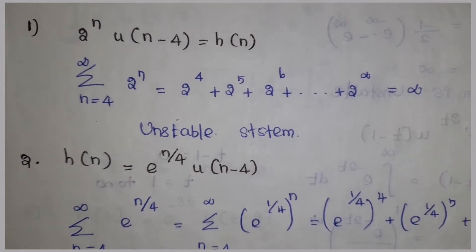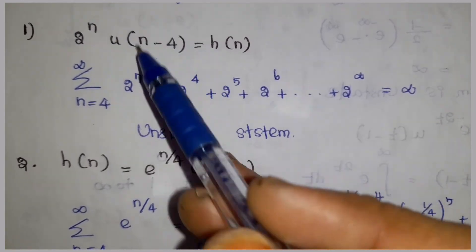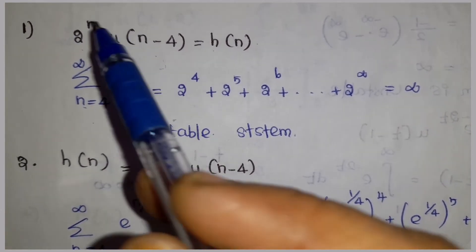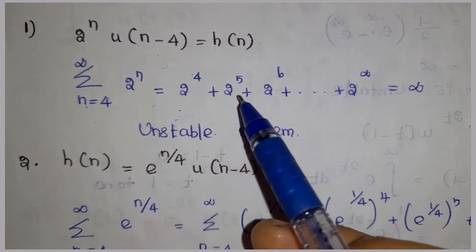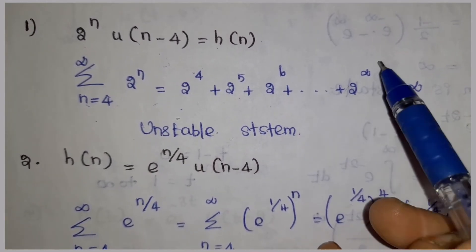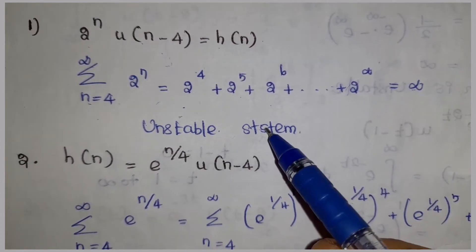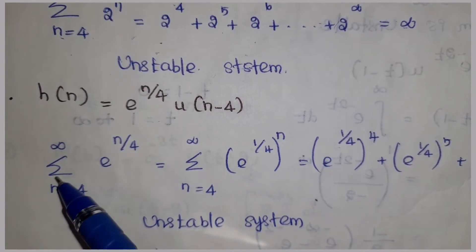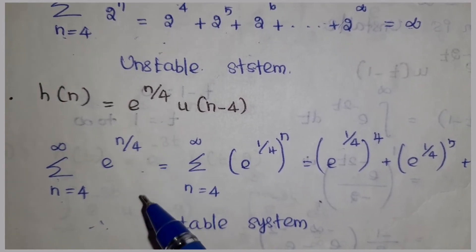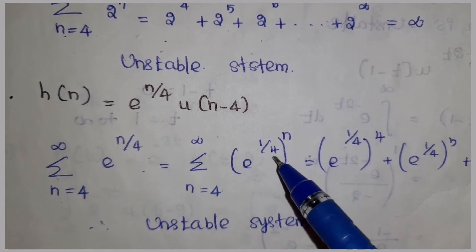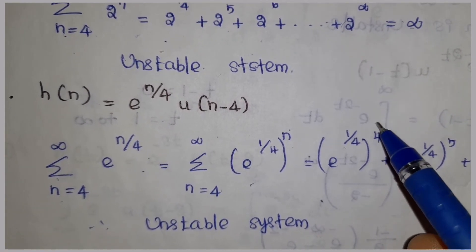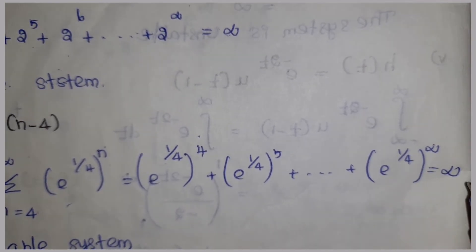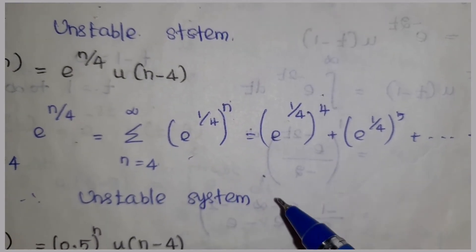Now the discrete problems. First discrete problem: h(n) = 2^n u(n-4). With u(n-4), the limit runs from 4 to infinity. Substituting 2^n: as n goes to infinity, 2^infinity = infinity. Therefore, the system is unstable. Second discrete problem: h(n) = e^(n/4) = (e^(1/4))^n. As n goes to infinity, e^(infinity) = infinity. Therefore, the system is also an unstable system.